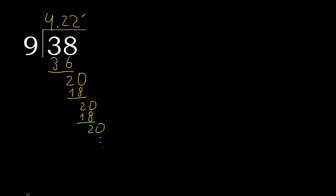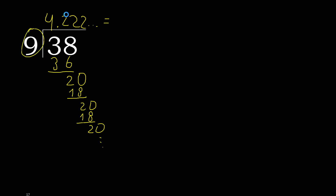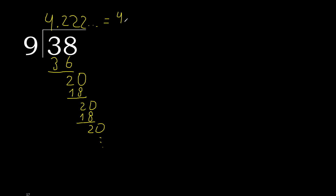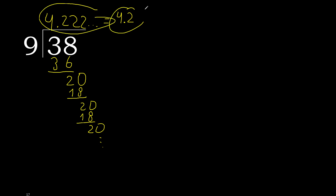Therefore here 2 repeats. So 38 divided by 9 is — after the point, 2 repeating. Therefore like this, repeat. Equal.